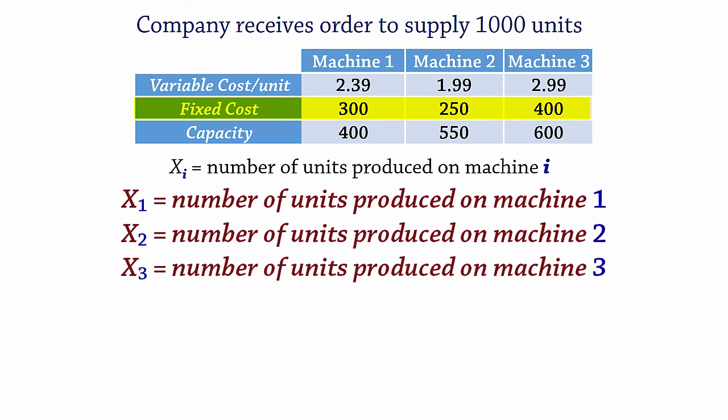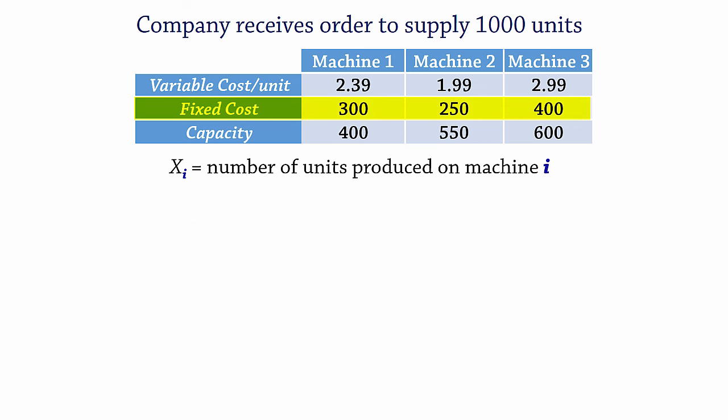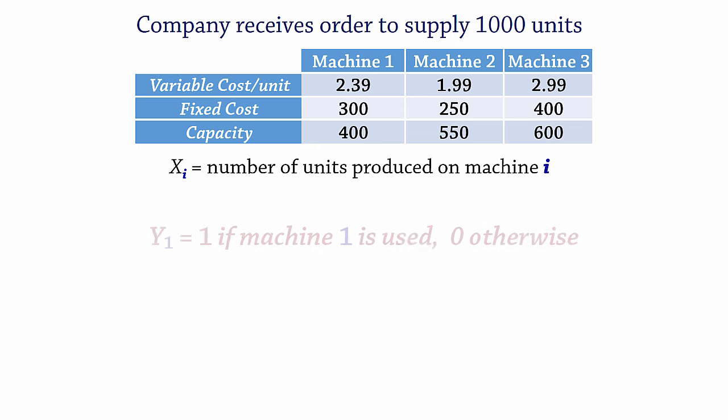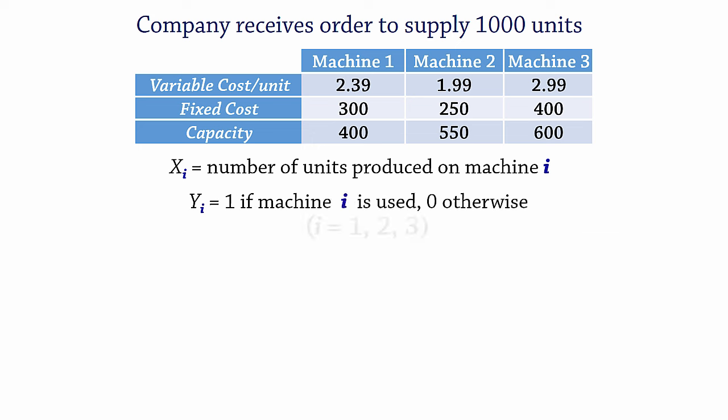Now because fixed costs indicate that the entire cost will be incurred if the corresponding machine is used to produce it all, we define another set of decision variables. For machine 1 we can write, y1 equals 1 if machine 1 is used, 0 otherwise. That is, if x1 is greater than 0, y1 equals 1. Otherwise, y1 equals 0. For all three machines we write, yi equals 1 if machine i is used, 0 otherwise.